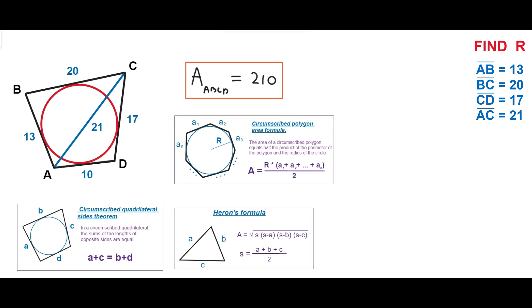In our case, the area of quadrilateral ABCD = r × (13 + 20 + 17 + 10) / 2. Since we already know the area of quadrilateral ABCD, the radius of the inscribed circle is r = (2 × 210) / 60 = 7. Thanks for watching!